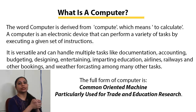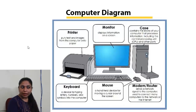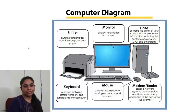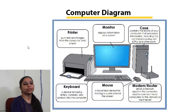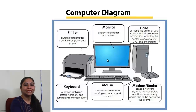Now we have the computer diagram. There are various components of computer shown in this diagram. The first component is the monitor — the screen which displays information. The monitor is used to display data or information on the computer screen.